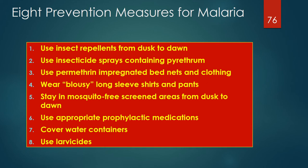The 8 prevention measures are: 1. Use insect repellents from dusk to dawn. 2. Use insecticide sprays containing pyrethrum. 3. Use permethrin-impregnated bed nets and clothing. 4. Wear blousy long-sleeve shirts and pants. 5. Stay in mosquito-free screened areas from dusk to dawn. 6. Use appropriate prophylactic medications. 7. Cover water containers. 8. Use larvicides.